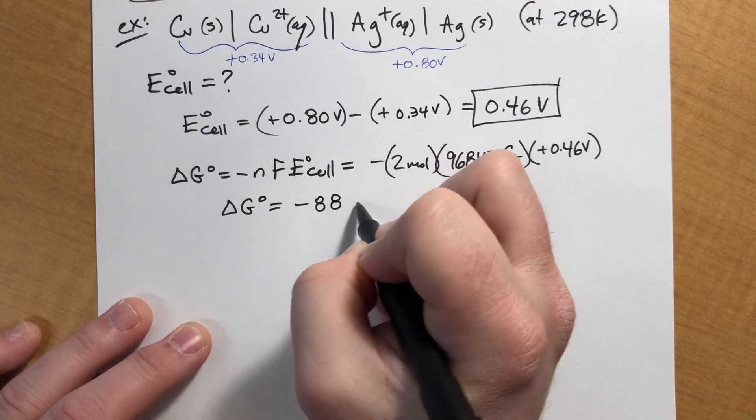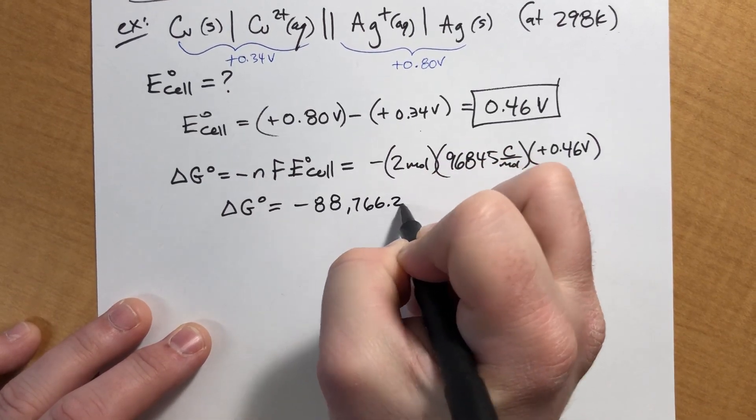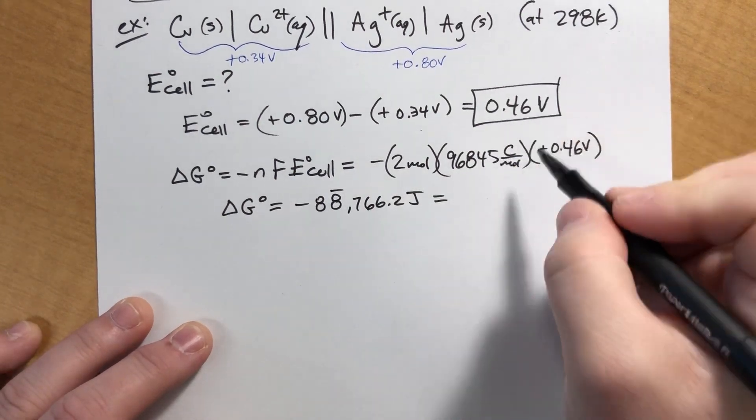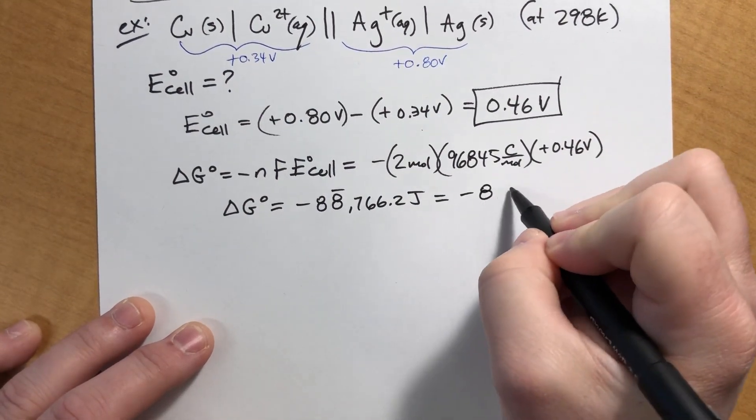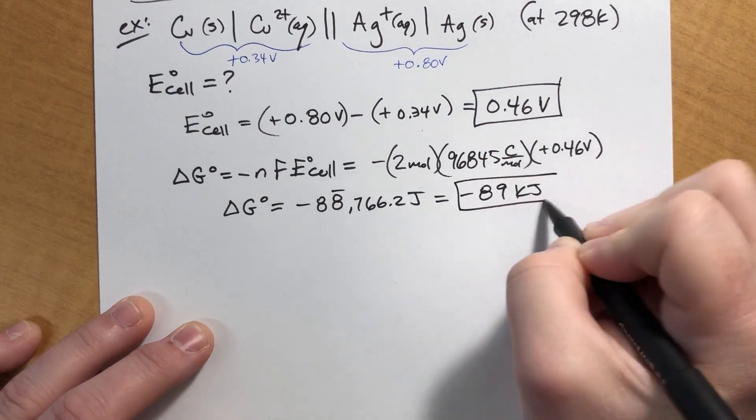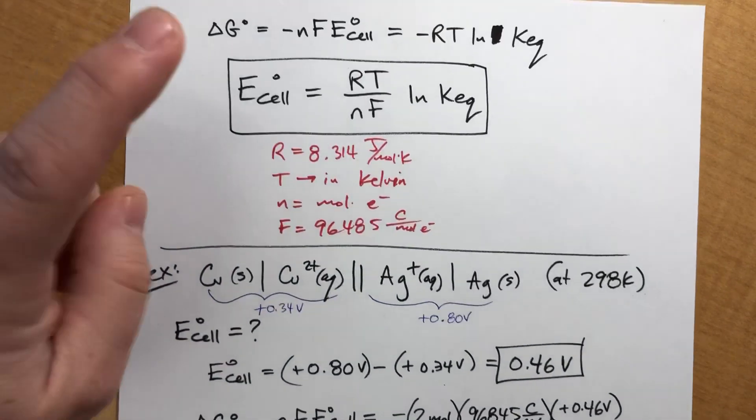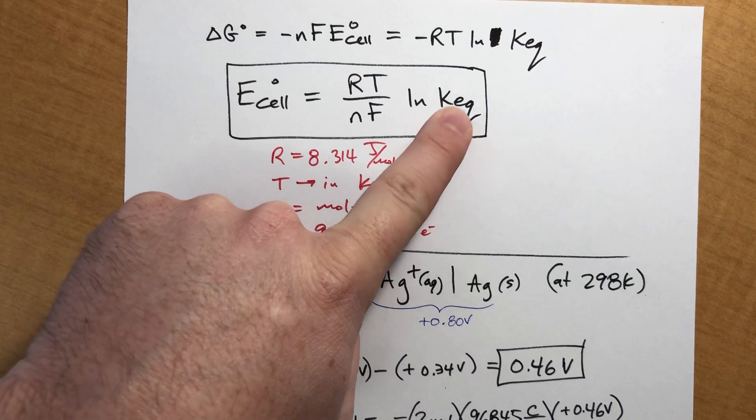So delta G for this particular reaction comes out to negative 88,766.2 joules, which a couple of sig figs here. This only has two. So negative 89 kilojoules. Nothing too bad. Not terrible yet.